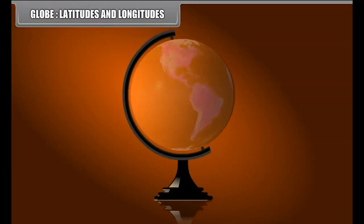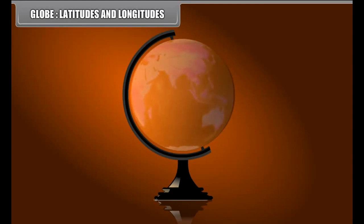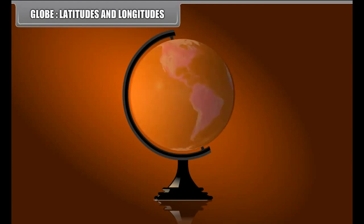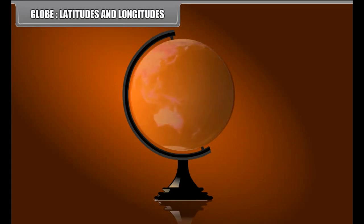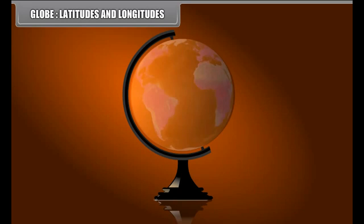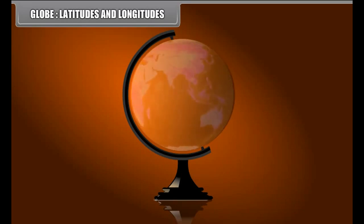Globe, Latitudes and Longitudes. It is believed that the earth is spherical in shape. The most suitable way of representing the earth as a whole is by a globe. A globe is a model of the earth on a small size. The globe is mounted on an axis so that it can rotate freely.